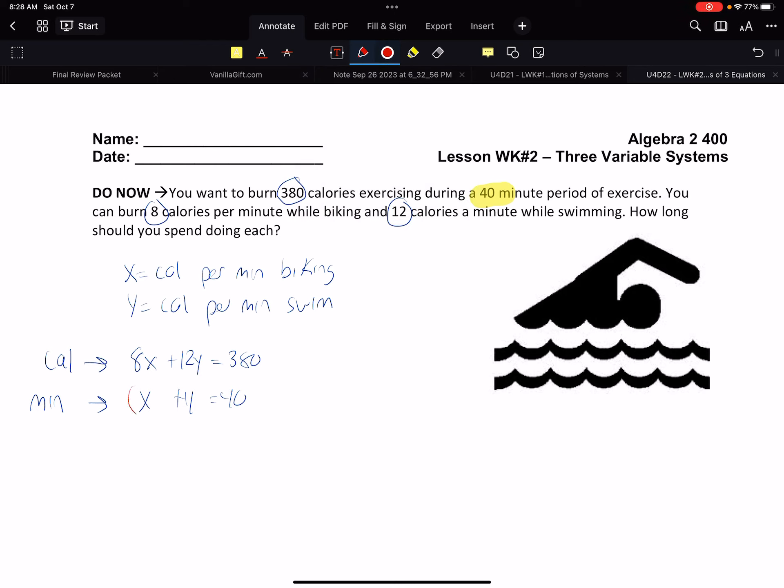I'm gonna go elimination, that's my go-to. Negative 8x minus 8y equals negative 320. Those are gone, 4y equals 60, y equals 15. So we got 15 minutes swimming, which means we have 25 minutes biking. Write your answer out logically - 25 minutes biking, 15 minutes swimming, that's our answer.